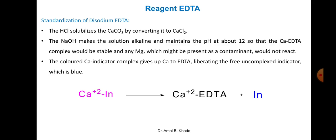We fill the burette with 0.05 molar disodium EDTA and start the titration, adding drops of EDTA into the complex present in the conical flask. EDTA is a hexadentate ligand with six electron pairs that can be donated to an electropositive metal ion. Comparing its electron-donating ability with that of the indicator, EDTA is clearly more powerful. Therefore, the indicator is displaced by EDTA because the calcium-indicator complex is weak in nature.